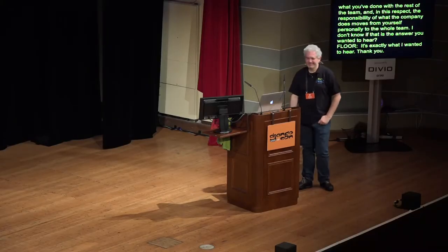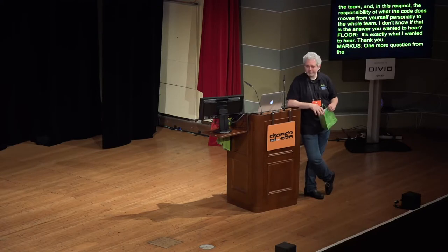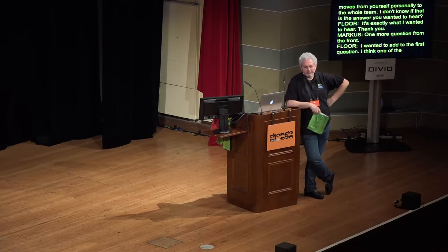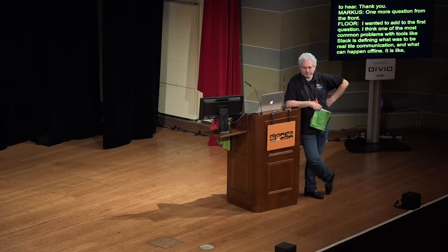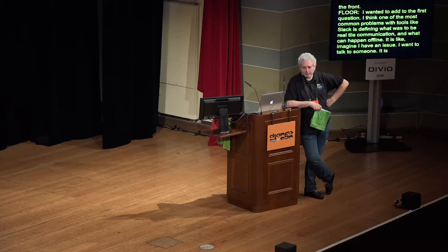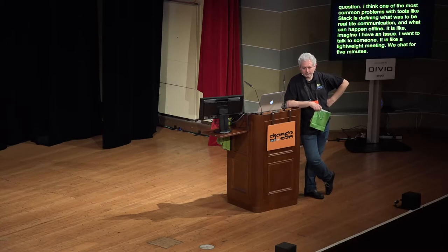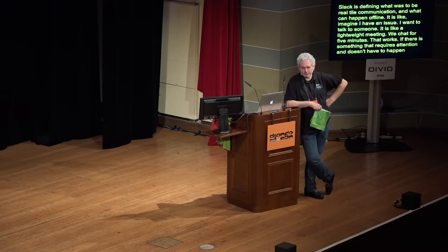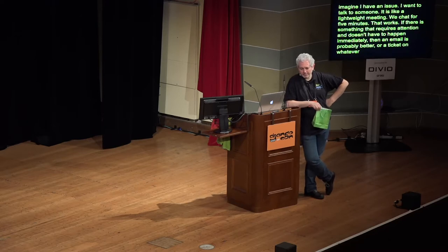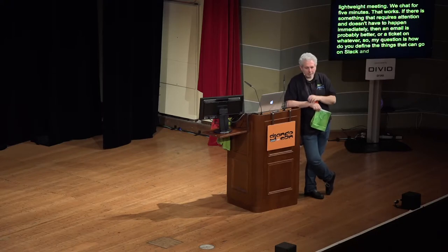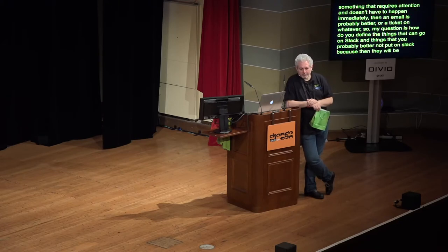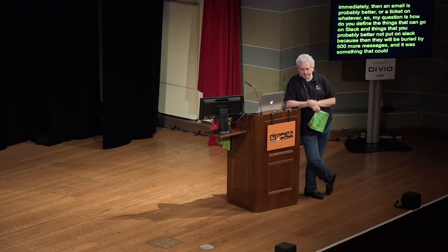Okay, that's one more question in the front. So, I wanted to add to the first question. Yes, sir. And I think that one of the most common problems with tools like Slack is defining what has to be real-time communication and what can happen offline. It's like, so imagine I have an issue. I want to talk to someone. It's like a lightweight meeting. We chat for five minutes. That works. But if there's something that requires somebody's attention and doesn't have to happen immediately, then an email is probably better or a ticket on whatever. So, my question is, how do you define the things that can go on Slack and things that you probably better not put on Slack because then they will be buried by 500 more messages and it was something that could have waited and it's better if you deal with it like once a day when you look at all your emails or tickets or whatever?